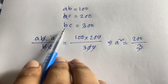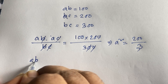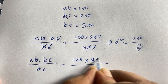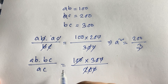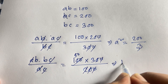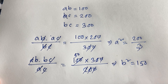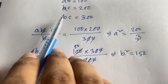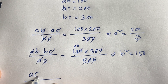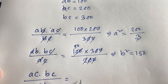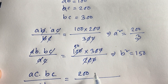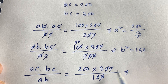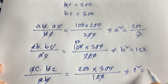Now multiplying ac times bc divided by ab: 200 times 300 divided by 100. Since ac·bc/ab equals c², we cancel terms and find c² equals 600. So we have a² equals 200/3, b² equals 150, and c² equals 600.